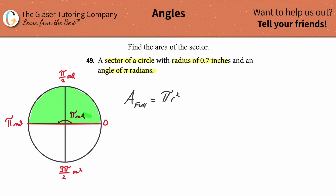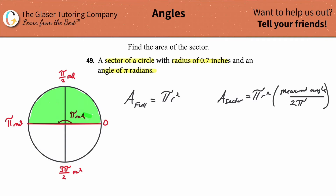The other way to do it is to use the formula. The area of a sector equals pi r squared — the area of the full circle — multiplied by the measured angle, all divided by two pi since they're giving us radians. If they gave you degrees, this denominator would have just been 360.